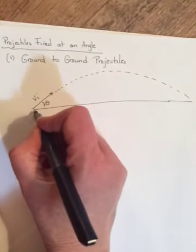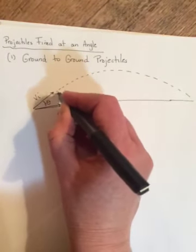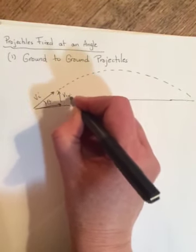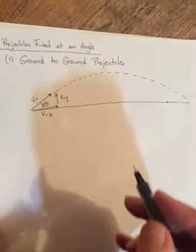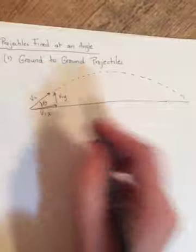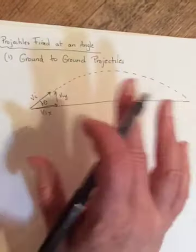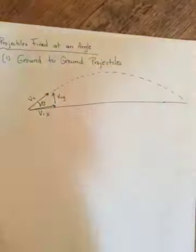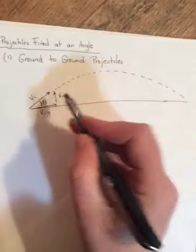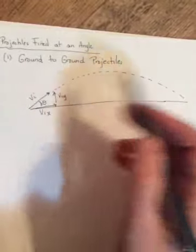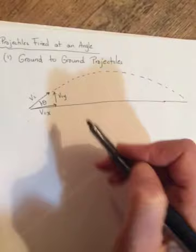Okay, and so because it's at an angle, it means that this time VIY is not zero. There is a VIY and there is a VIX. In the X direction, AX is still zero. We're still going to assume that there's no air resistance. There's nothing that's going to speed it up in the X direction from the instant it leaves your hand or your stick or your club or your whatever until it hits the ground again.